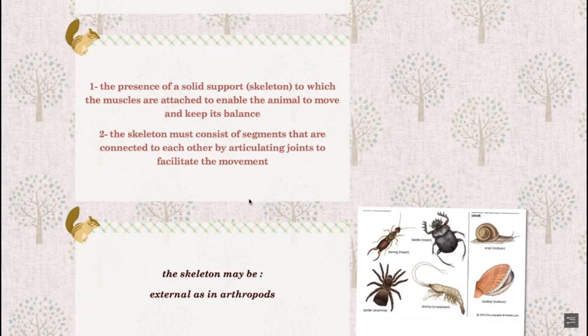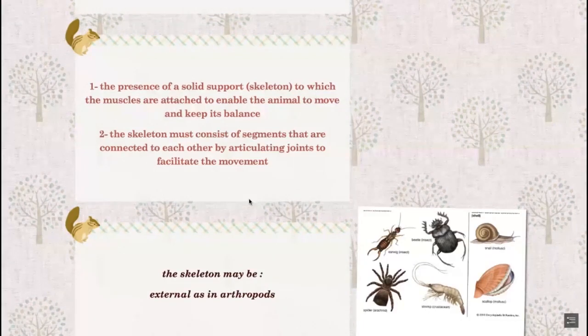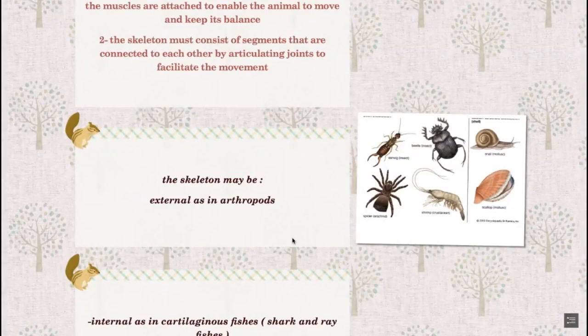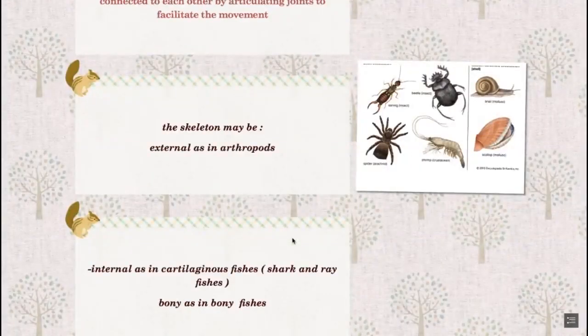The conditions for movement are: the solid support and the joint which facilitates movement. When we look at the skeleton present in living organisms, we see the types of skeleton. There are external skeleton and internal skeleton. The external skeleton is like in insects and arthropods - they have chitin, we call it exoskeleton.